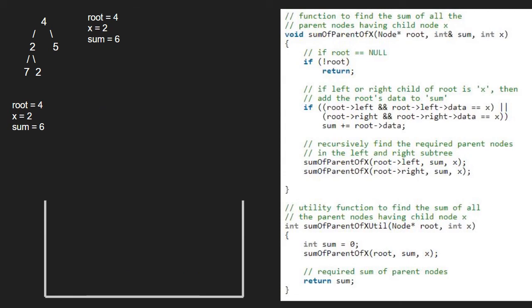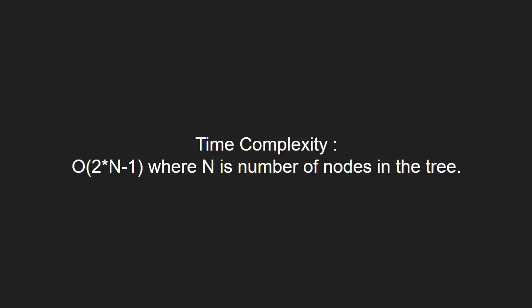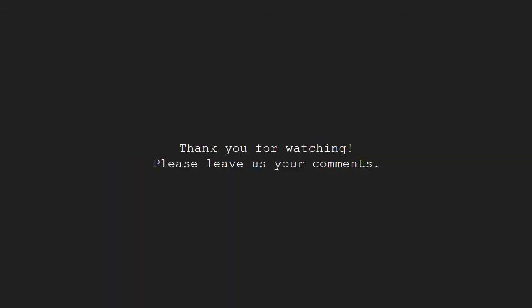Execution for root 4 is also over and we have the final sum which is 6. Now let us have a look at the time complexity of the program. This code will run in O(n) complexity, where n is the number of nodes in the binary tree. With this, we come to an end of this tutorial. For any doubts or suggestions, please leave them in the comment section below.